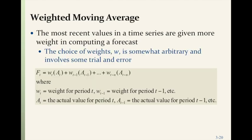The weighted moving average gives the most recent values in a time series more weight in the computation. You take each value and apply a weight to it — a weight for period t, weight for period t minus one — then multiply the actual values by their respective weights and sum them.